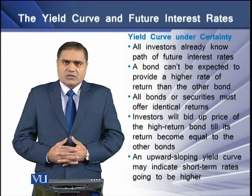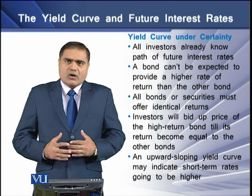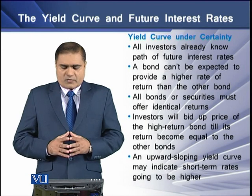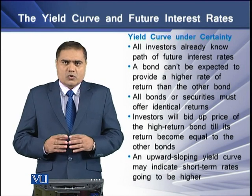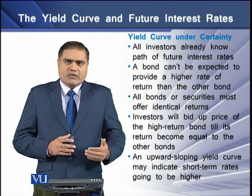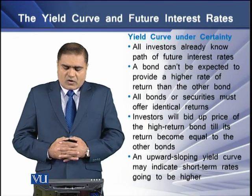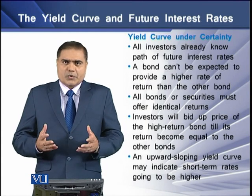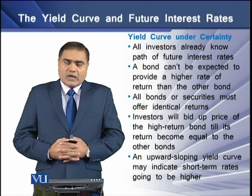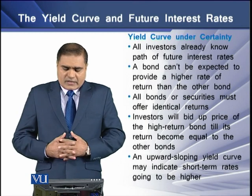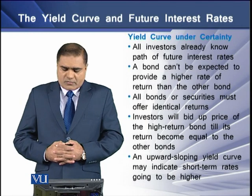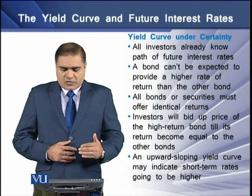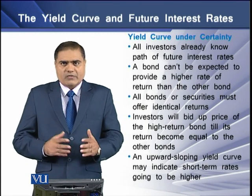Under certainty, all investors already know the path of future interest rates. This means that a bond cannot be expected to provide a higher rate of return than other bonds available in the market — all bonds and securities must provide an identical return to bondholders. If that is not the case, then investors will bid up the price of high-return bonds until their return becomes equal to other bonds available in the market.